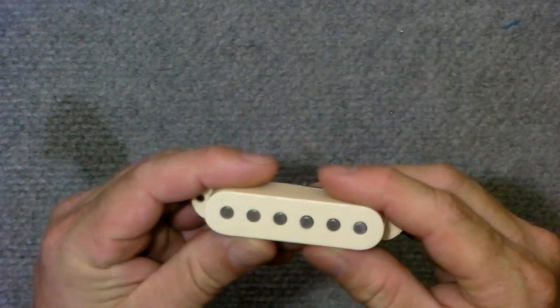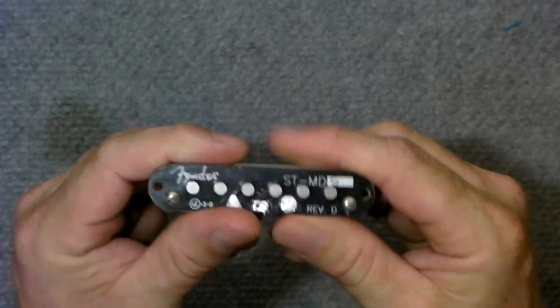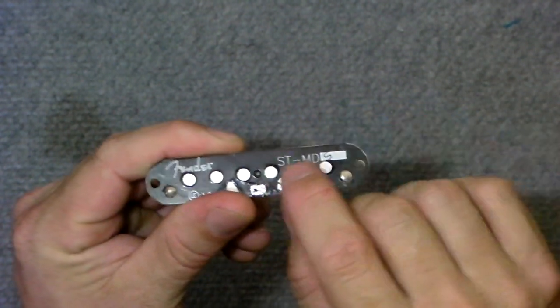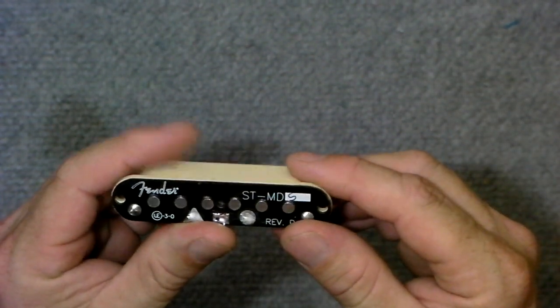So this pickup, it is a Fender SCN, it's out of a Stratocaster, and it's a middle pickup. So let's have a look inside.